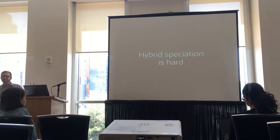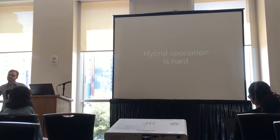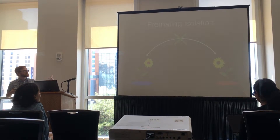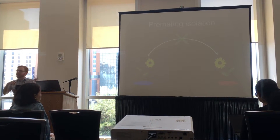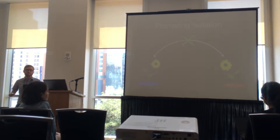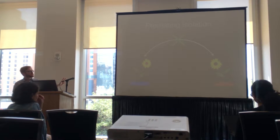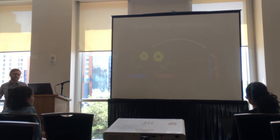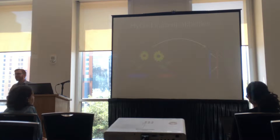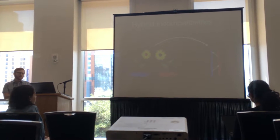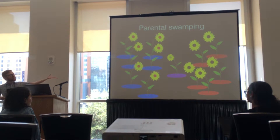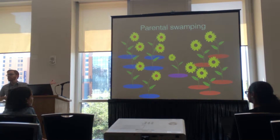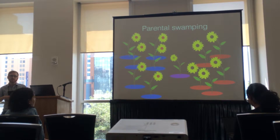This is surprising because hybrid speciation is a really hard process with a really narrow range of parameters. First, there are pre-mating isolations — these are two different species that may grow in different areas or have different flowering times and pollinators, so not many hybrids are produced. If hybrids are produced, there's hybrid incompatibility: when you bring together alleles from different genomes, they may not work together, and you may get sterility or inviability. And if that hybrid survives, it's likely swamped out by the parents and backcrosses into one parent rather than becoming a new hybrid species.